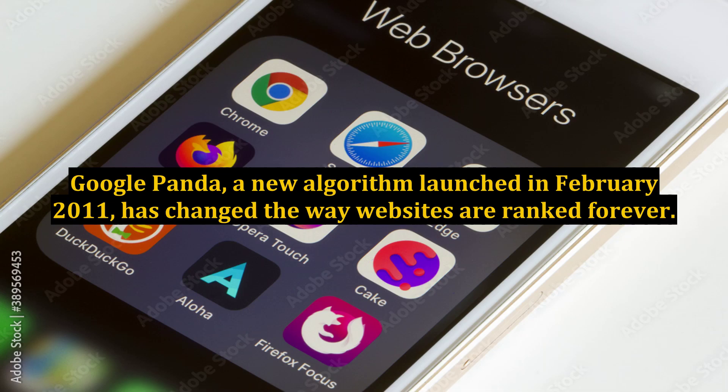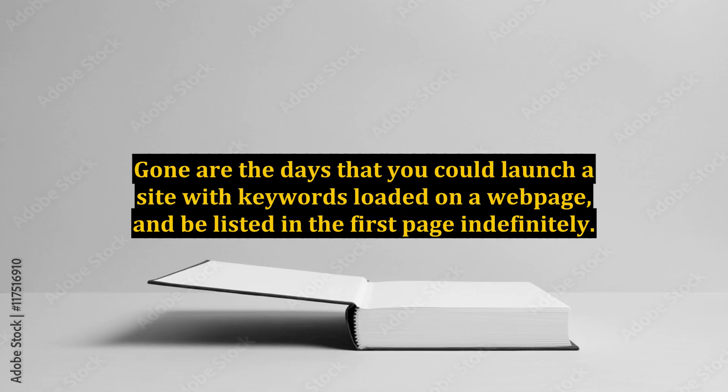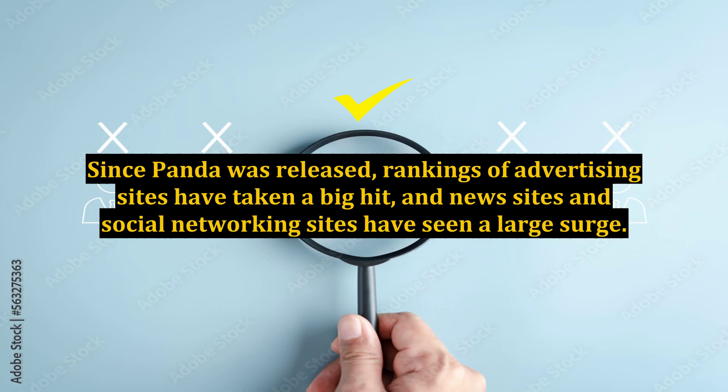Google Panda, a new algorithm launched in February 2011, has changed the way websites are ranked forever. Gone are the days that you could launch a site with keywords loaded on a web page and be listed on the first page indefinitely. Since Panda was released, rankings of advertising sites have taken a big hit, and news sites and social networking sites have seen a large surge.